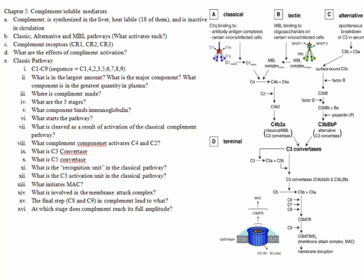Complement is synthesized in the liver, made out of 18 heat-labile proteins, and is inactive in circulation until activated. You need to know what activates each pathway: the classical pathway is started by an antibody-antigen complex; the mannose-binding lectin pathway involves virally infected cells; and the alternative pathway comes from the spontaneous cleavage of C3 when it contacts those cells. You need to be able to answer all these questions — go back and review from your week two exam.